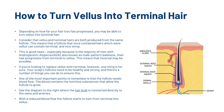If you're looking to replace vellus with terminal, one thing is for sure: your scalp's follicle needs to be healthy and strong, and there are a number of things you can do to ensure this. One of the most important points is that the follicle needs blood flow. The blood contains the nutritive substances that allow the follicle to grow. You can see the diagram on the right where the hair bulb is connected directly to the veins and arteries. With reduced blood flow, the hair follicle starts to turn from terminal into vellus.